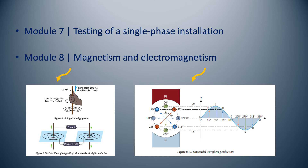Module 8 is about magnetism and electromagnetism. Alternating current theory used to have its own module, but theory on this topic is now covered in this module.